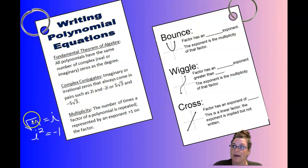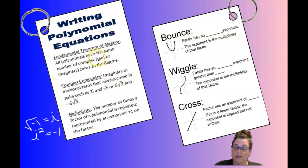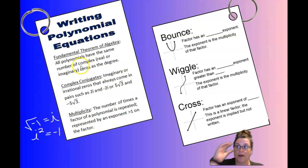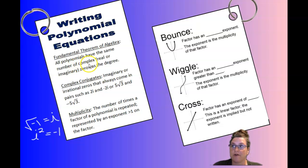Complex numbers include real numbers or imaginary numbers. Real numbers, when they're zeros, are x-intercepts on the graph. Imaginary zeros, though, don't show up along the x-axis as intercepts on your graph.